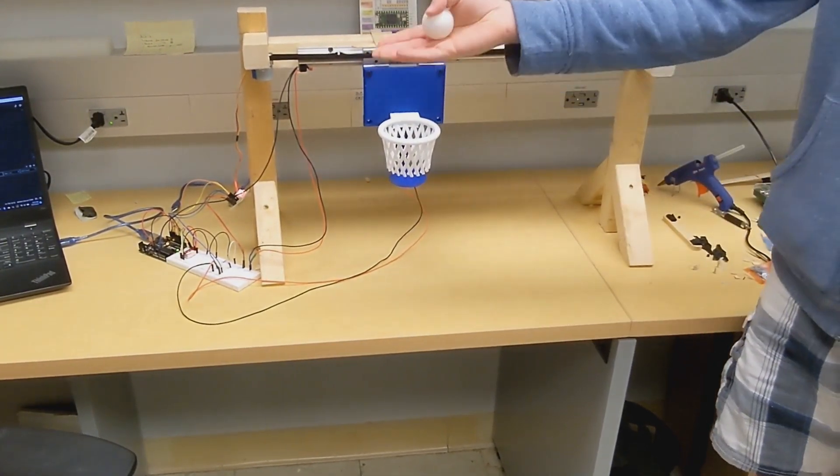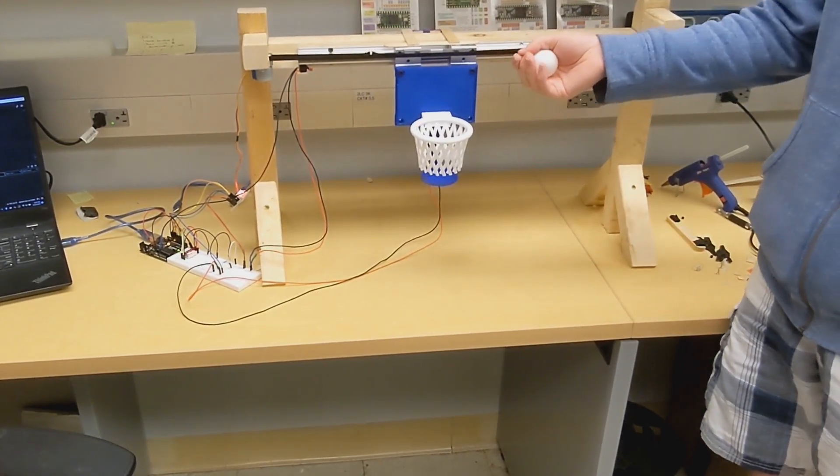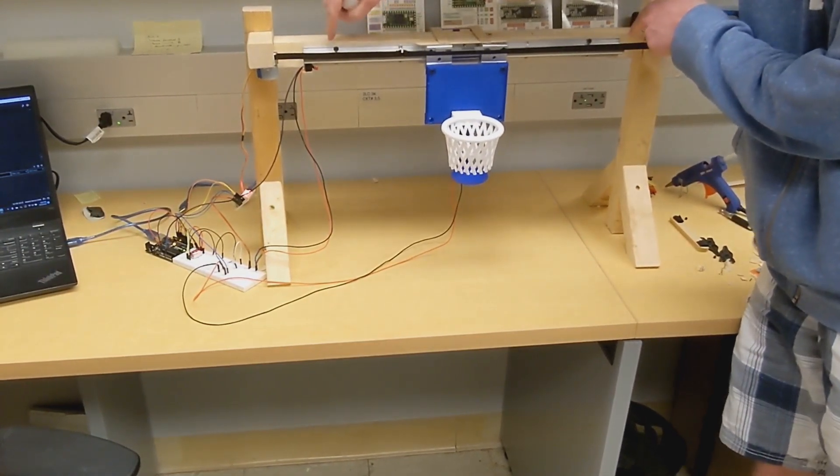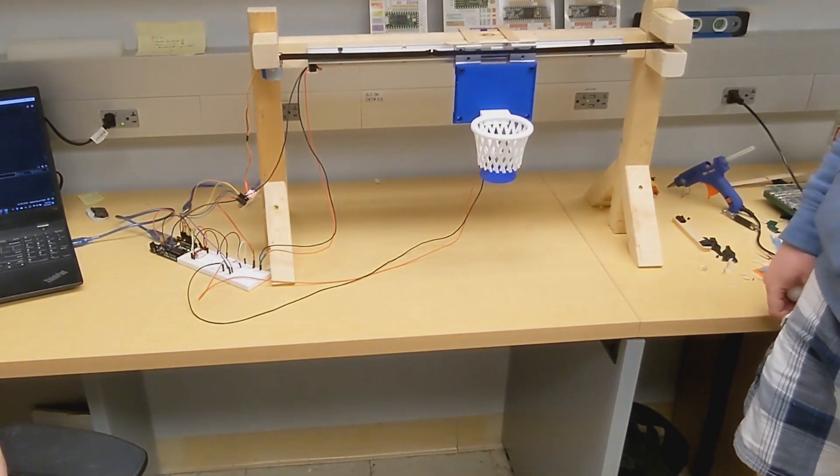So we programmed a random number generator in Arduino to allow the basket to move to a random position within two predetermined points, so it'll stop momentarily.